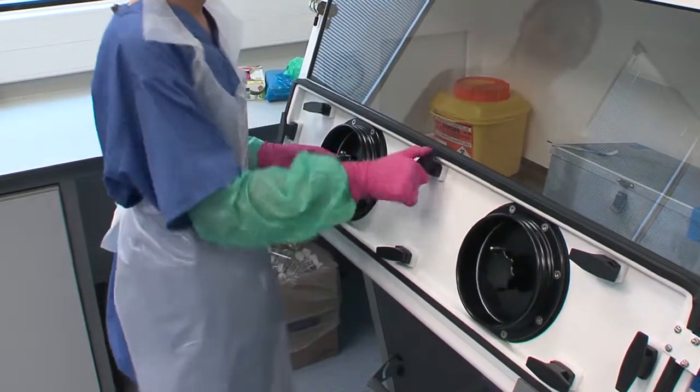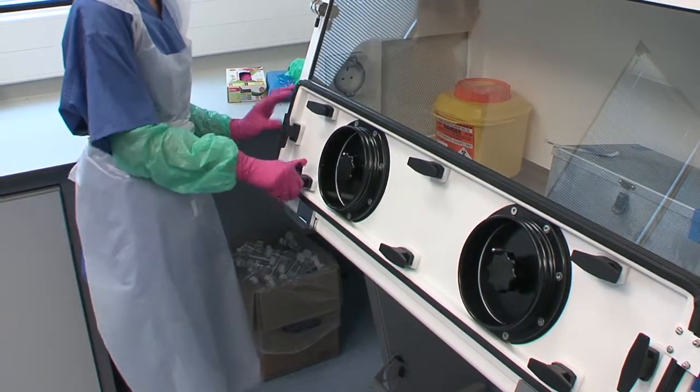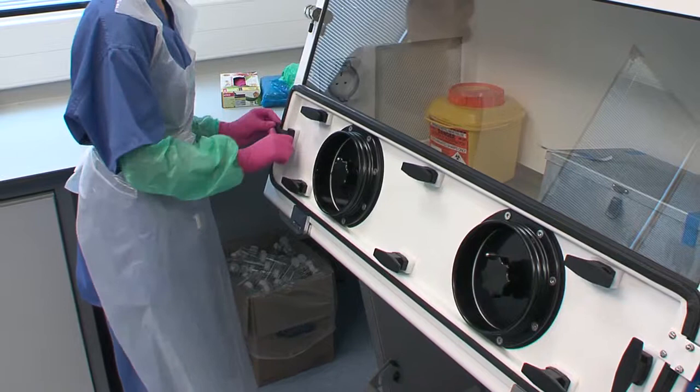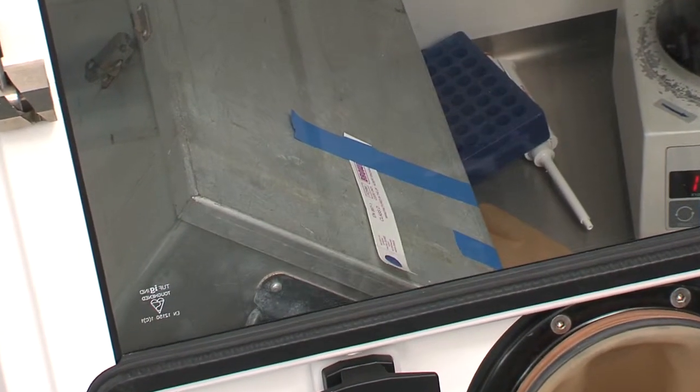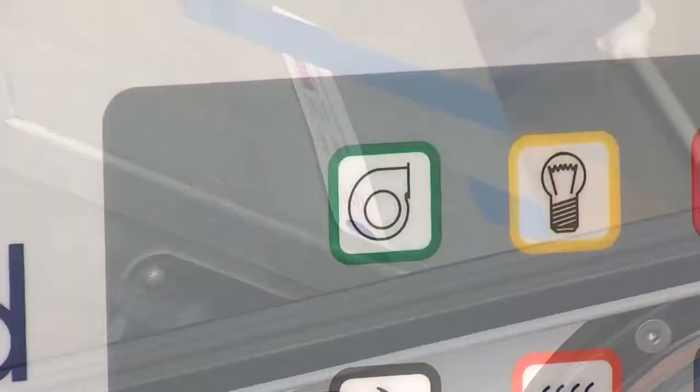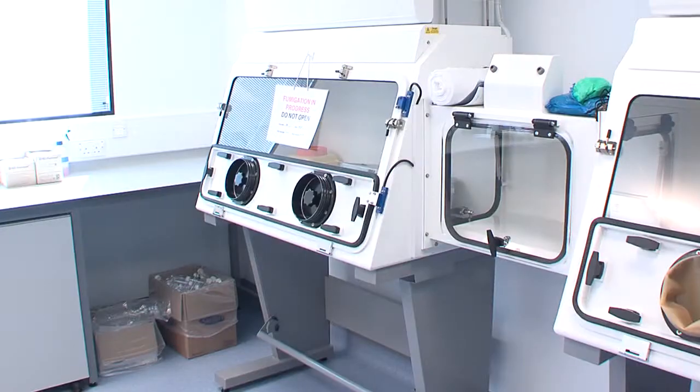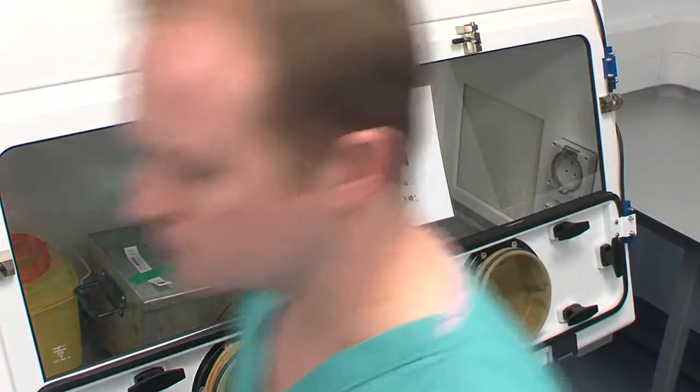When the clean-up procedure is complete and the cabinet is shut down, it should be given a final visual check to make sure that the door is secure. Any equipment or matter left in the cabinet should be fumigated in the cabinet. Once the cabinet has been cleaned, decontaminated, and shut down, signage should be put in place to indicate the status of the cabinet.